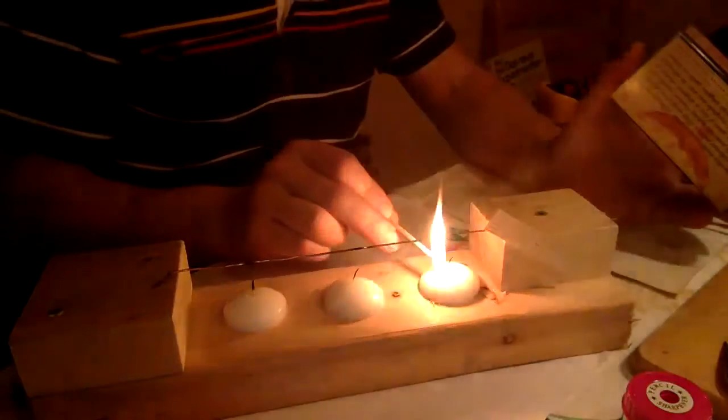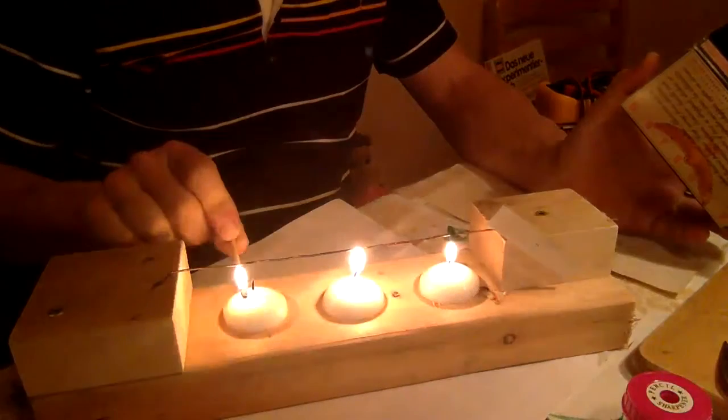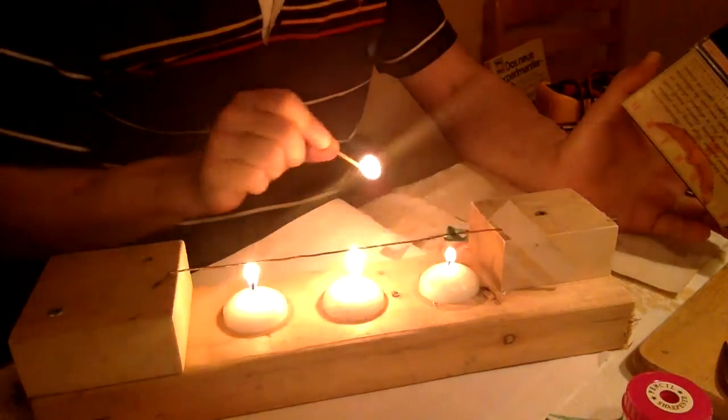So here we go. These are tea lights. They're sort of stuck into this wooden thing here. Can't really tip over that easily.